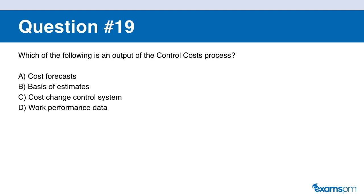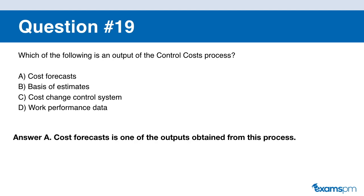Question nineteen. Which of the following is an output of the control cost process? A: cost forecast. B: basis of estimate. C: cost change control system. D: work performance data. If you said A, you are correct. Cost forecast is one of the outputs obtained from the control cost process.